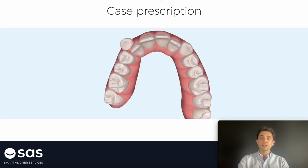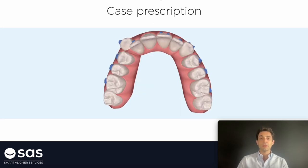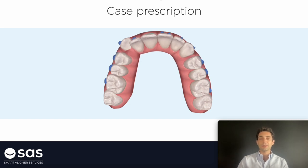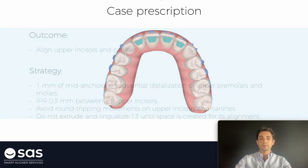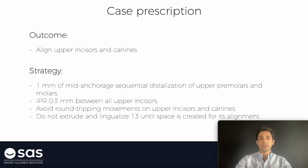Going back with the previous case, here you have the virtual planning that we have asked for this patient. We have asked for upper sequential distalization, some anterior proclination, and then aligning the upper canine once we have created enough space for that. Those are the instructions we have asked the technician. My goal, my outcome, is to align all upper teeth. But how are we going to do this — aligning, leveling, everything at the same time? No, with sequences.